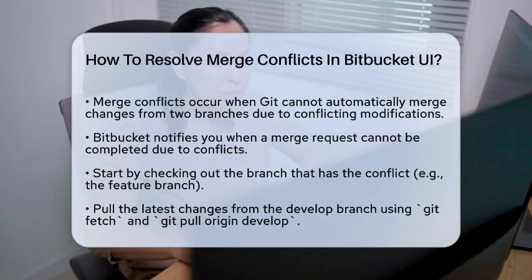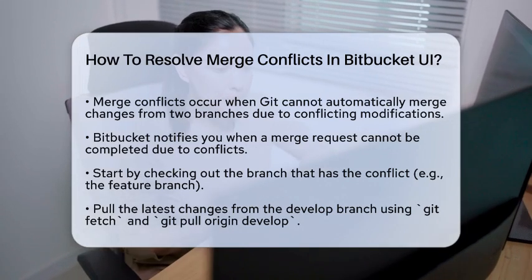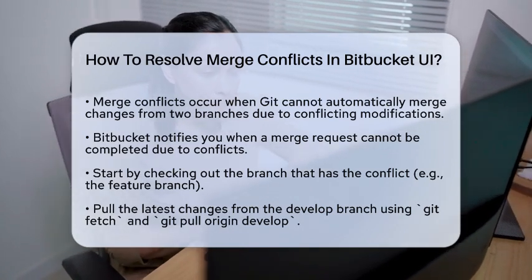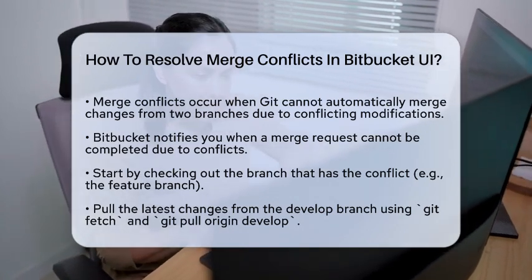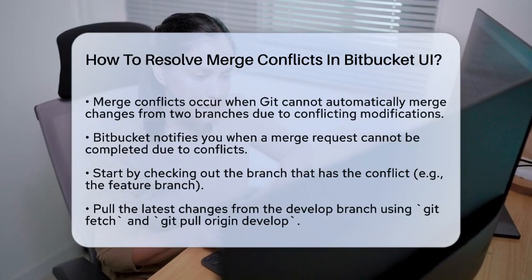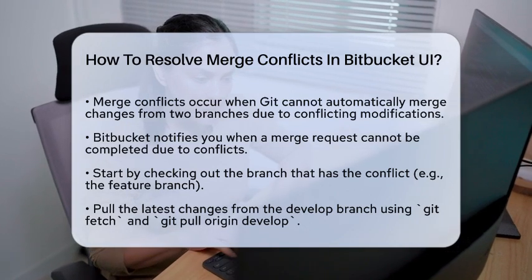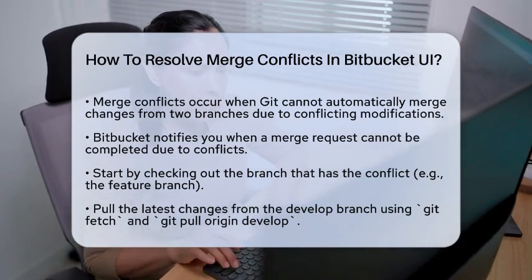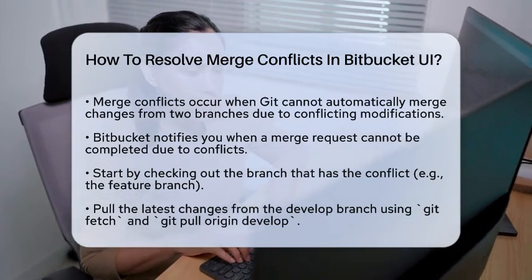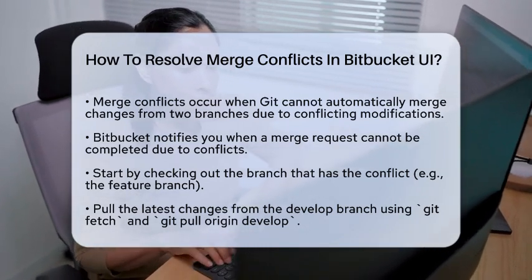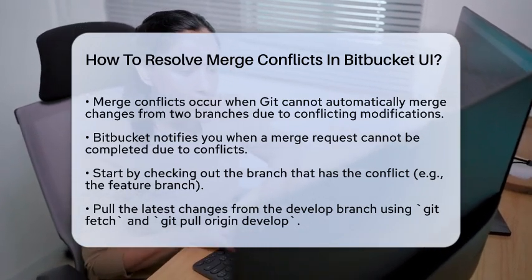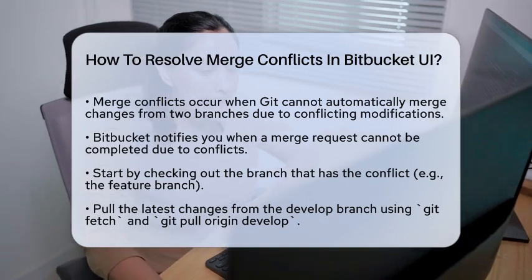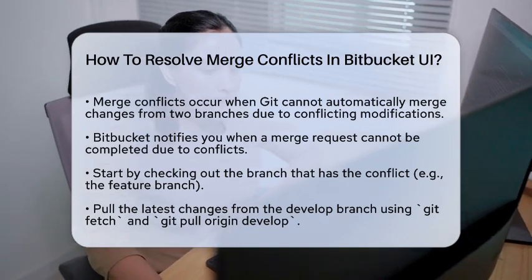First, let's understand what a merge conflict is. It happens when Git can't automatically merge changes from two different branches because there are conflicting changes to the same line of code or document. This means you need to step in and decide which changes to keep.